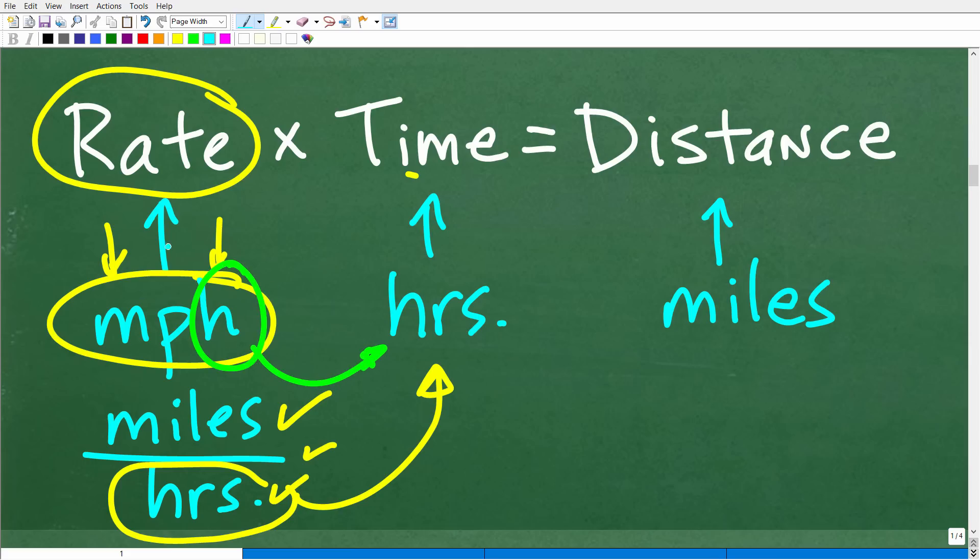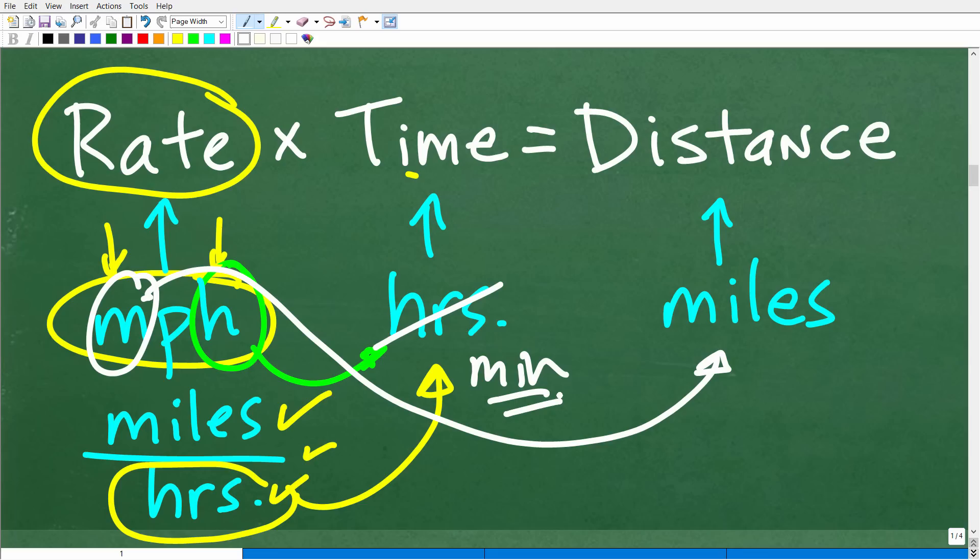And then here, our distance is going to be in miles. Okay, so if your units of measure are not consistent, then you need to convert. Okay, so in other words, if you're dealing with miles per hour and you have minutes here, okay, how fast did a train or a car going 60 miles per hour travel in five minutes? We need to convert your minutes to hours.